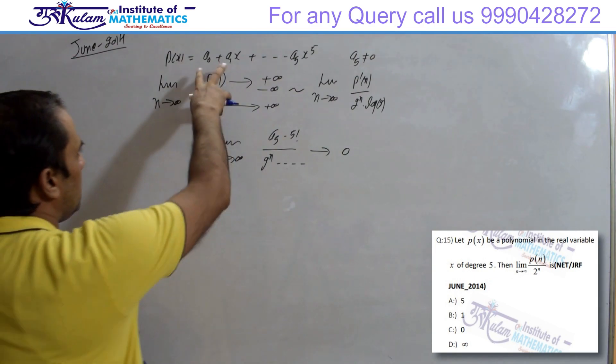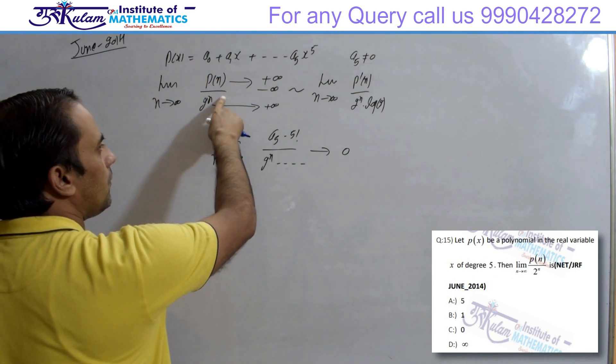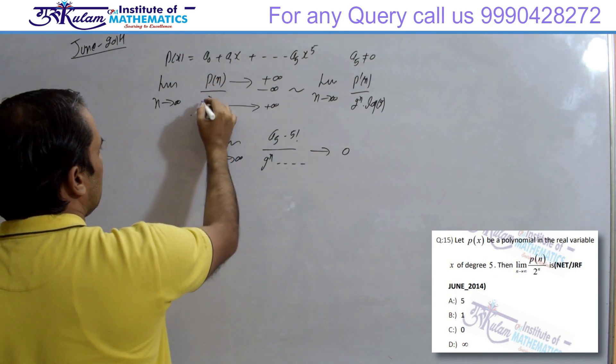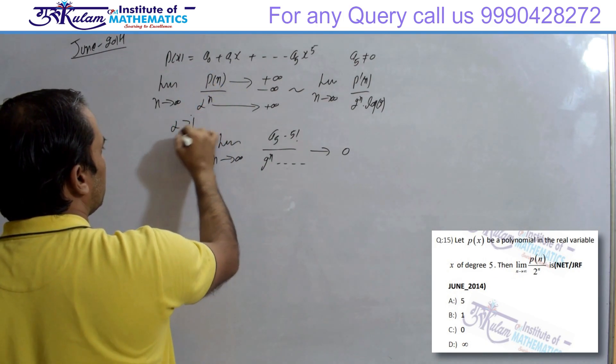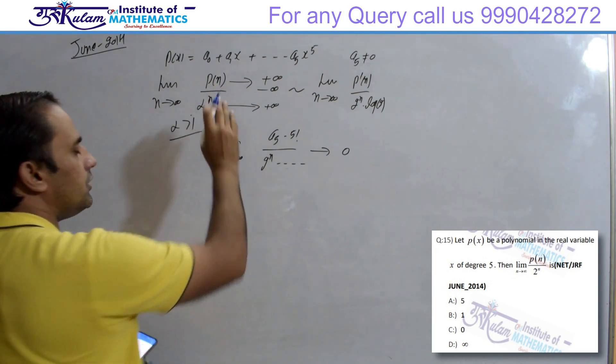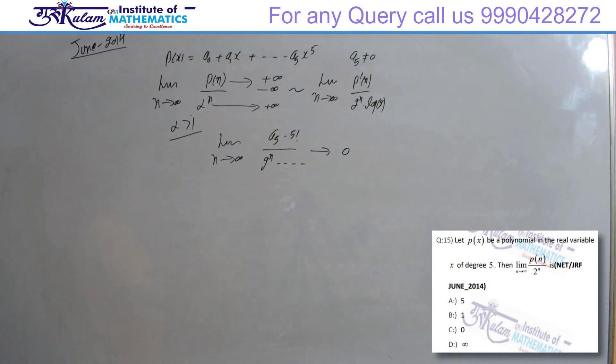अब आपको यहां कोई भी polynomial देदे, और यहां alpha to the power N देदे, और alpha greater than 1 देदे. तो definitely ये हमेशा limit कहां जाएगी, 0 पे. तो आपका answer जो है, that should be C option true, remaining all are false.